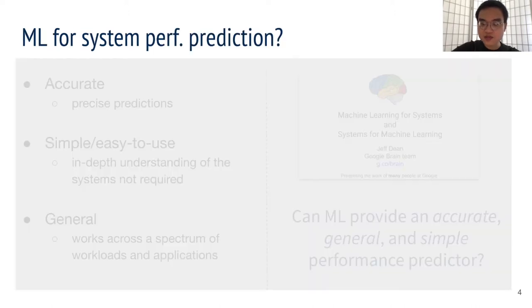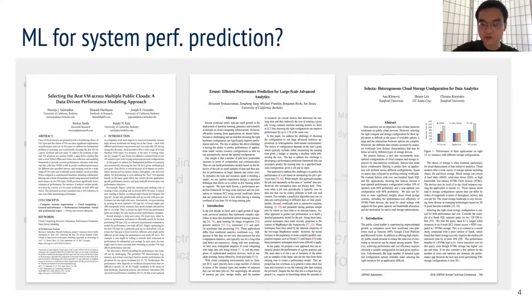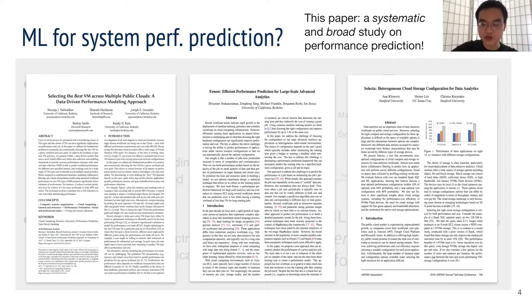There has been a growing body of work that applies machine learning to predict or optimize performance, and they report positive results. But these efforts focus on specific use cases, applications, and models, so they don't fully answer our question of generality and ease of use. In this project, we decided to take the first step filling this gap by doing a broad and systematic evaluation.